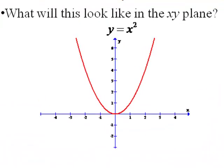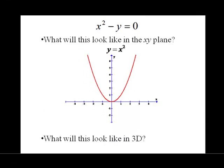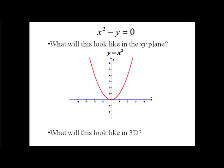The next one we're going to look at is x² - y = 0. So we might want to think about what this would look like in the xy plane. We can solve this very easily for y and we get y = x². Now this is a graph that we're very familiar with. It's just our parabola centered at zero, zero. So the question again, what will this look like in 3D?